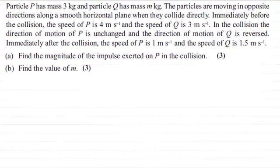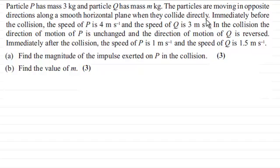For this question, we're given that particle P has mass 3 kilograms and particle Q has mass m kilograms. The particles are moving in opposite directions along a smooth horizontal plane when they collide directly. Immediately before the collision, the speed of P is 4 m per second and the speed of Q is 3 m per second.